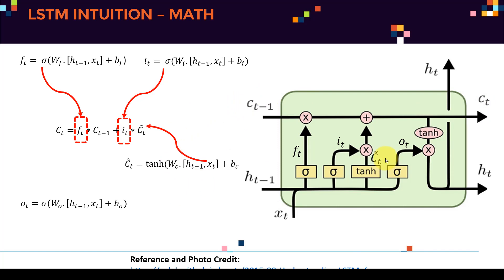The output gate ot is computed similarly: apply sigmoid to (Wo × [ht-1, xt] + bo), generating ot. Then the hidden state output ht = ot × tanh(ct). We apply tanh to the cell state ct, then multiply pointwise by the output gate ot to produce ht, which is fed to the next memory cell. These six equations fully describe the LSTM network.